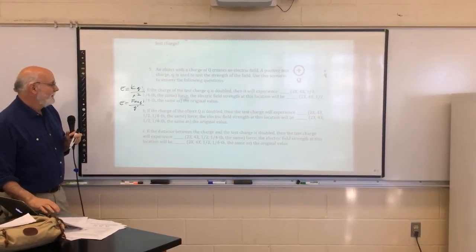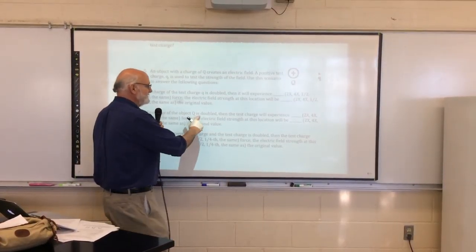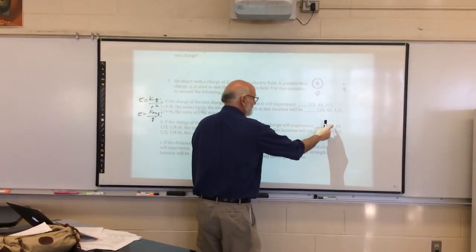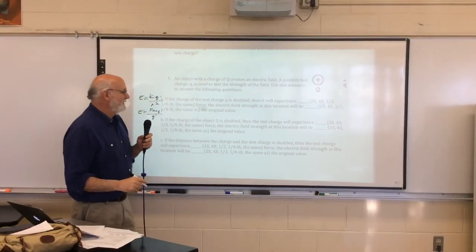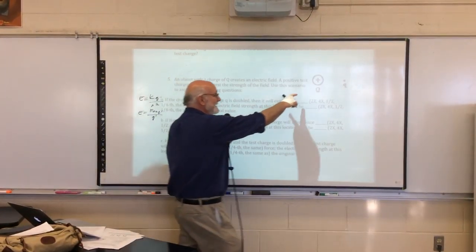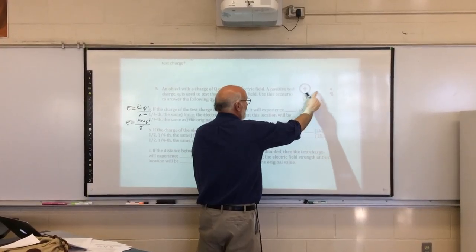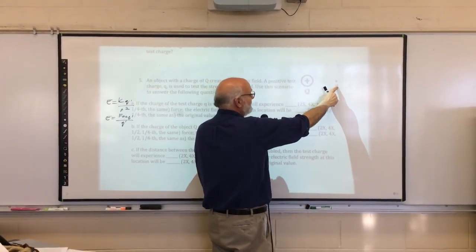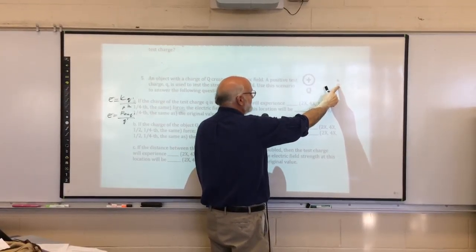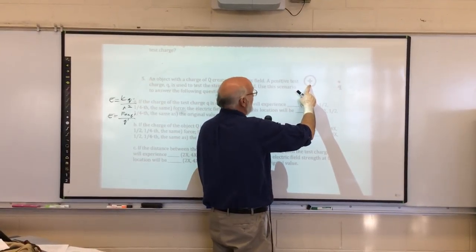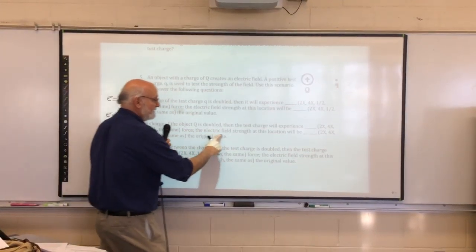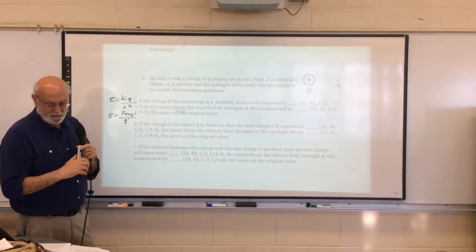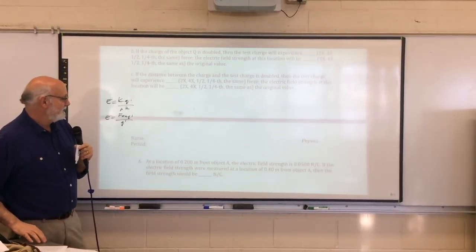Now, it says, if the charge of the object Q is doubled, then the test charge, well, it's going to exert a field of two times force. And the electric field strength, well, I'm doubling this guy now, not the test one. This is the big guy. That's the small guy. It's sort of like this is the elephant. These are the fleas. If I double the mass of the fleas on an elephant, it makes no difference. I double the mass of the elephant, makes a difference. So, what happens here? The electric field strength location will be two times. It'll be doubled. And then you guys can do the other ones. They're just basically the same as the ever were.